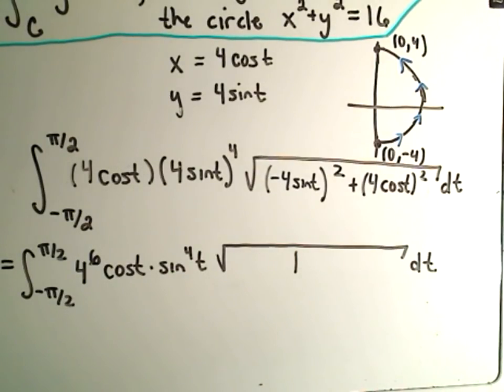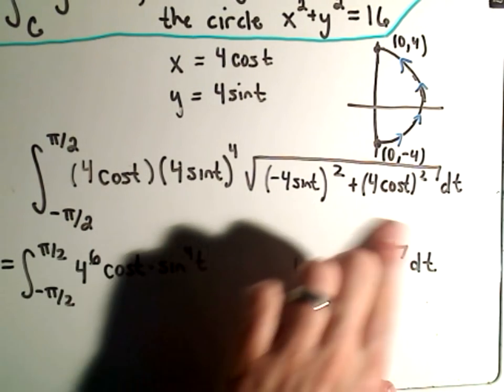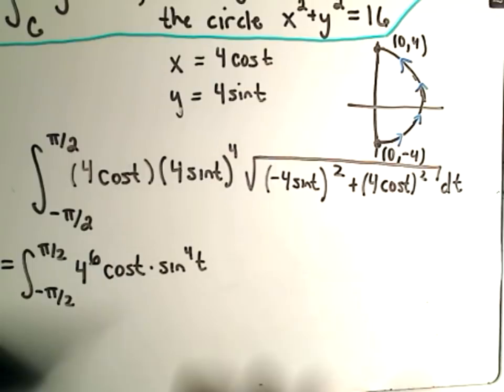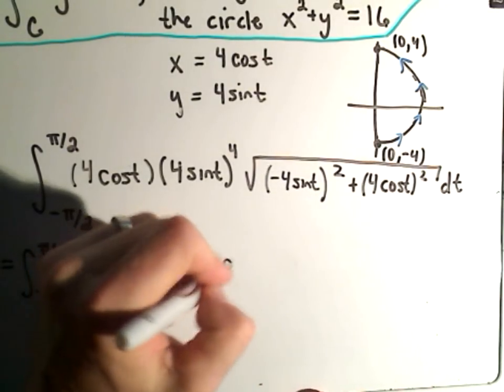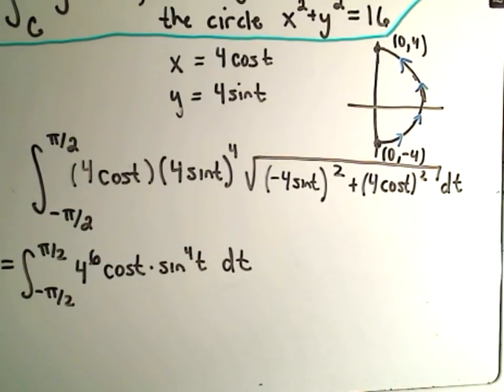But we know that sin^2 + cos^2 is just 1. So really I'm left with just 1 underneath the square root, which is nice because the square root of 1 is just 1. So really my whole integral just turns into the integral from -π/2 to positive π/2 of cos(t) times sin(t), which is nice.